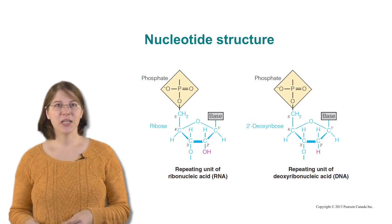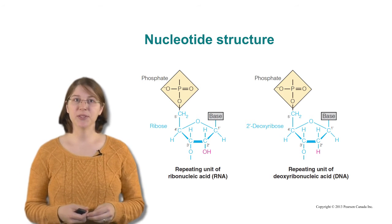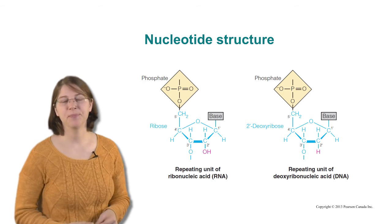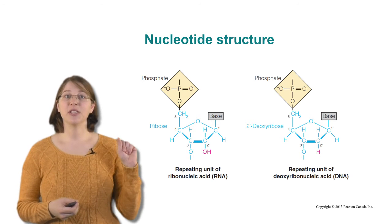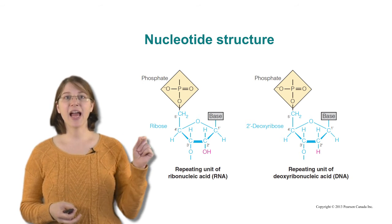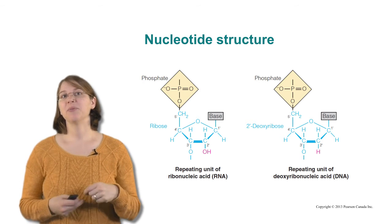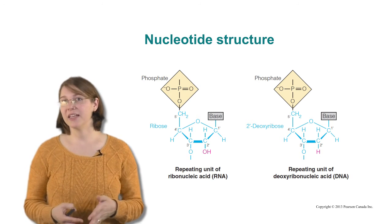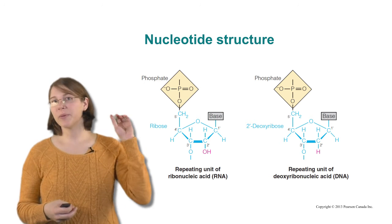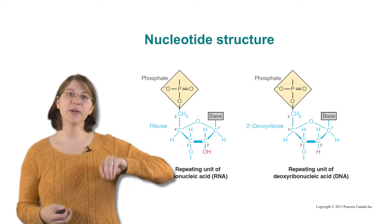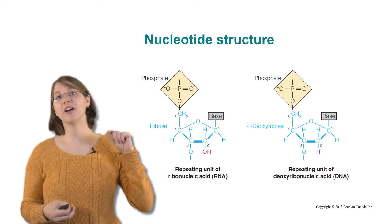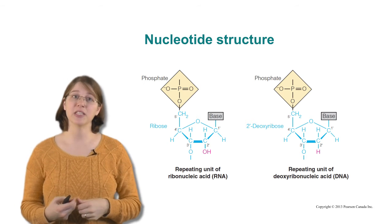Once we have the bases, we can add them to our ribose, which we made through our formose reaction. The bases here are shown in gray, and they're added to the first carbon of our ribose. Now remember, that's our reactive end of our ribose, and that's normally where we would have an OH group, but the OH group leaves, and the carbon then binds to one of the nitrogens on our bases.